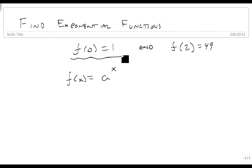And so this one shouldn't come as any surprise. f(0) equals 1 just means that a to the 0 equals 1, which we already know to be true. Well if that's the case, then there's just a 1 in front of here, so all we need to worry about is this f(2).